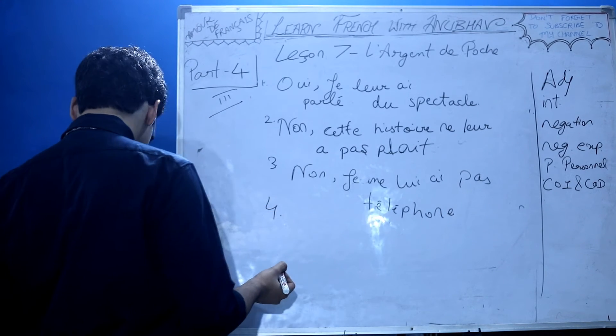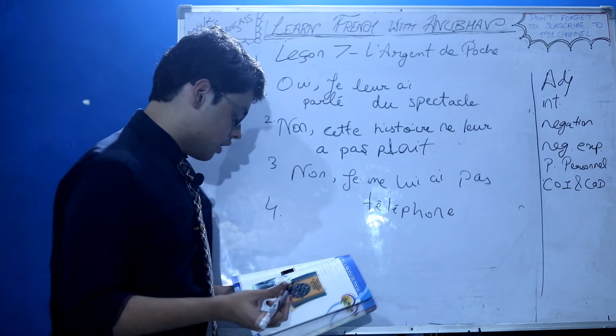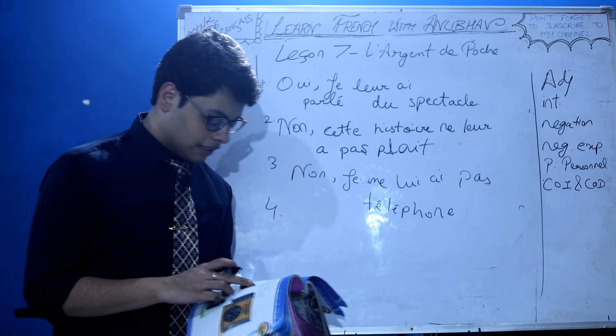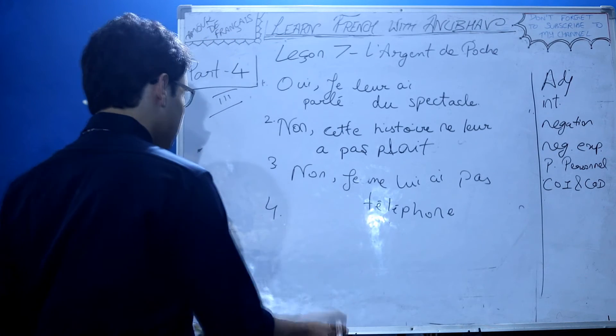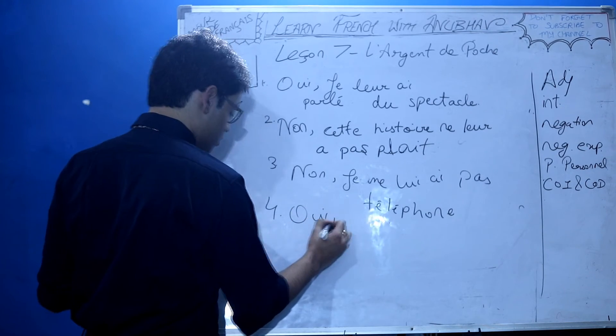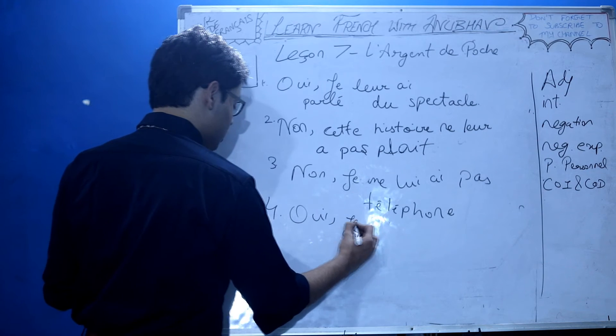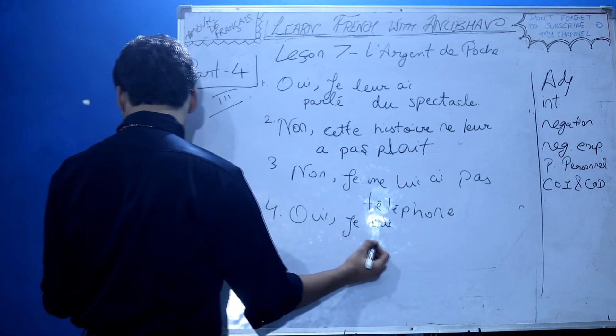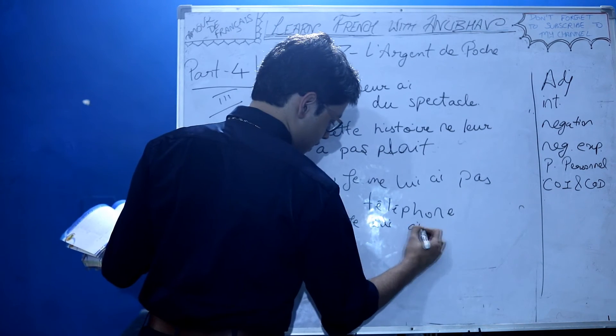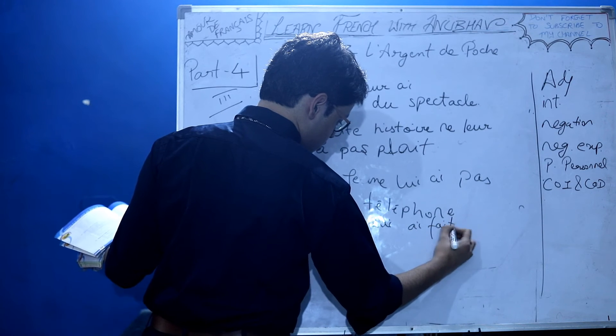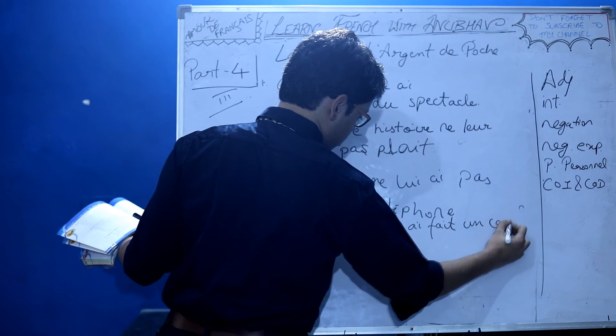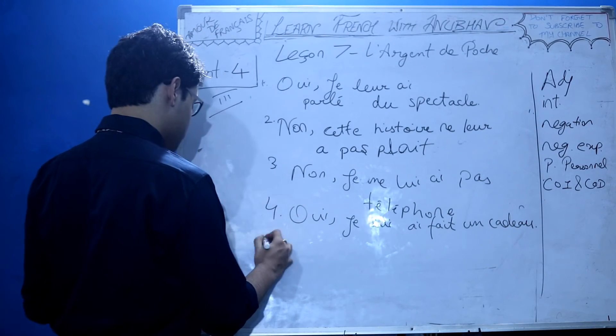Fourth: Est-ce que tu as fait un cadeau à ta sœur? Did you give a gift to your sister? Answer should be oui. Oui, je lui ai fait un cadeau. I gave her a gift.